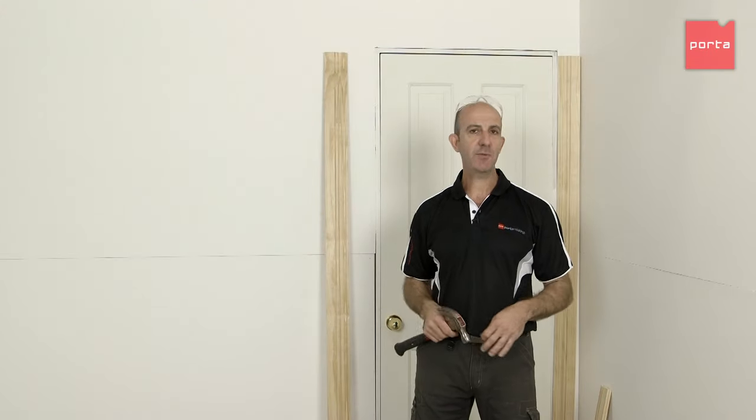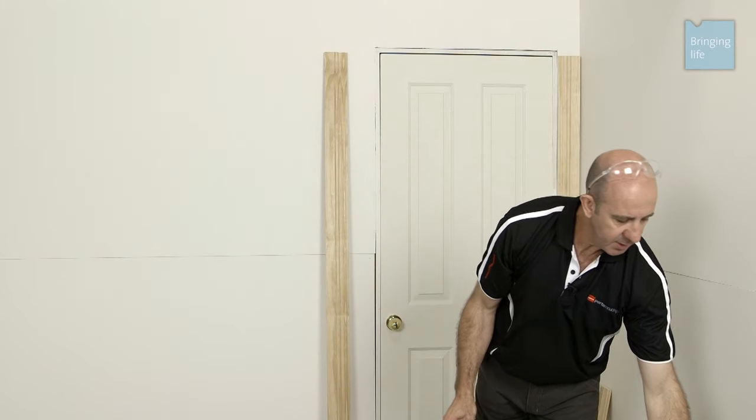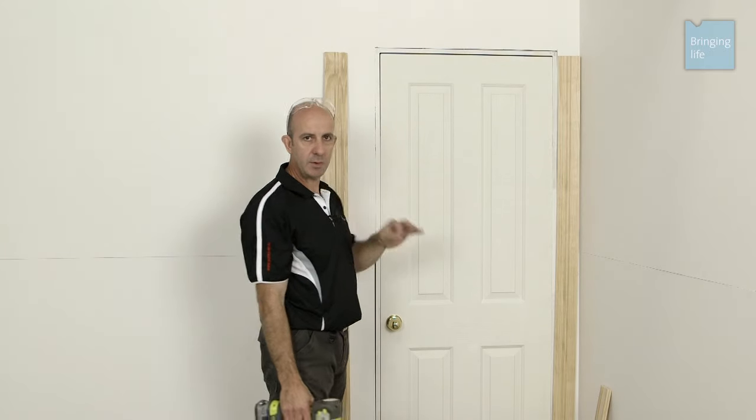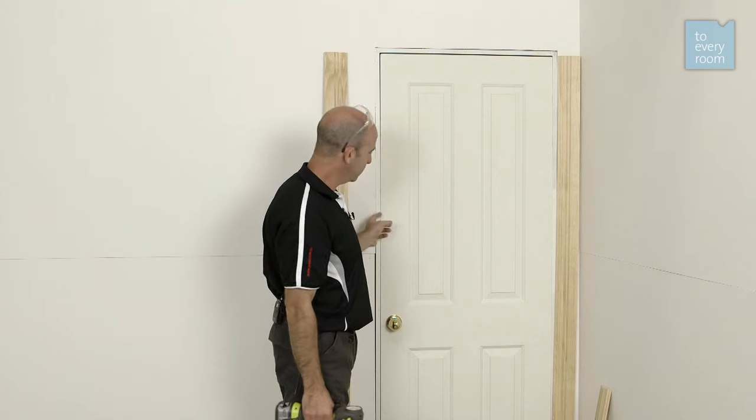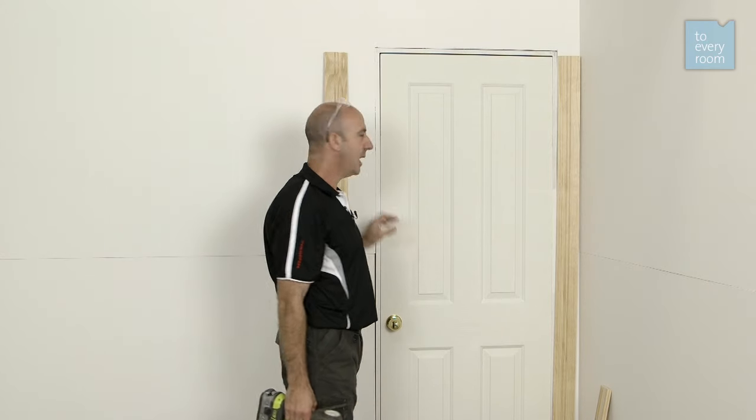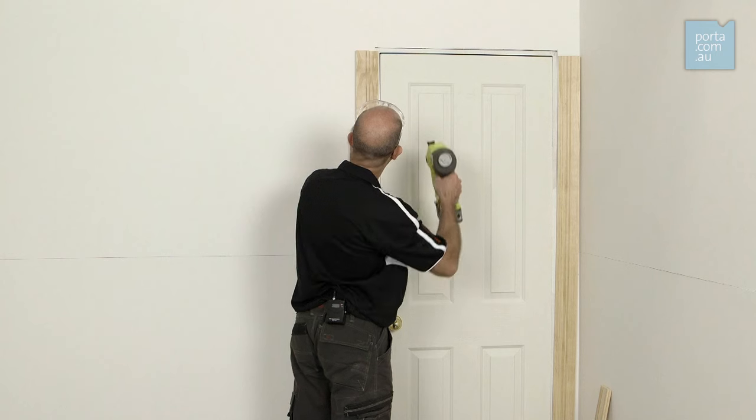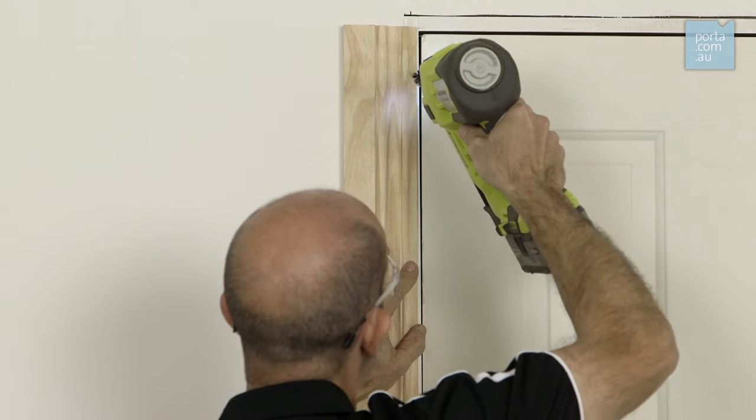To install your architraves, you've got another two choices. You can use a trusty old hammer and nail, or you can use a nailer, but the most important thing is, whichever method you decide, is to line up your architrave with your quirk line. Now I've chosen to use three millimeters, and I've marked the pencil line around my jamb. The way to start is just line up at the top, make sure it's aligned, and then just fire the first nail.